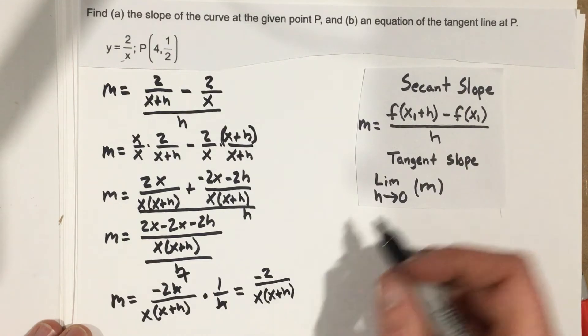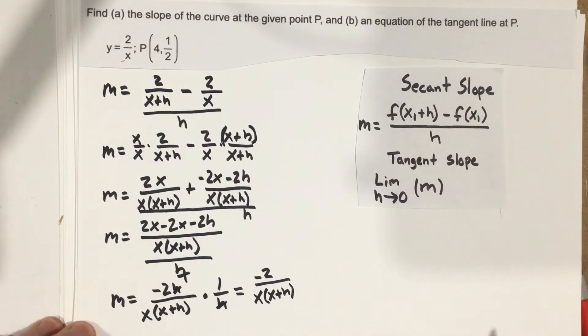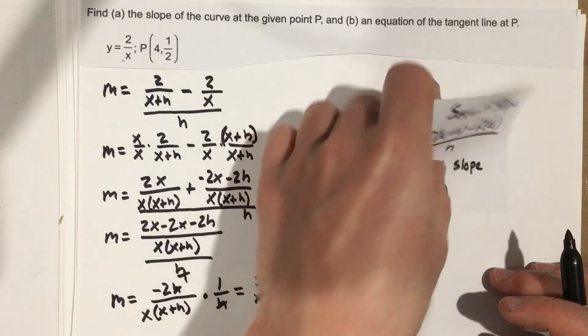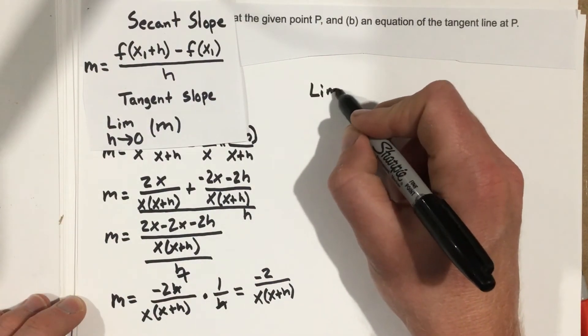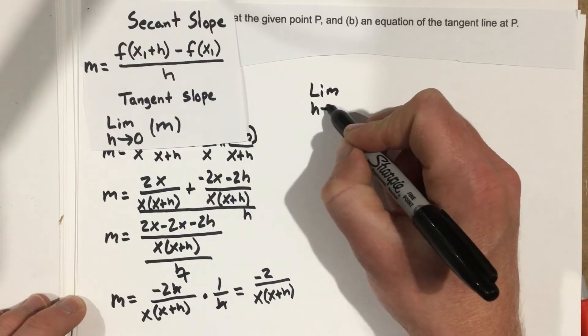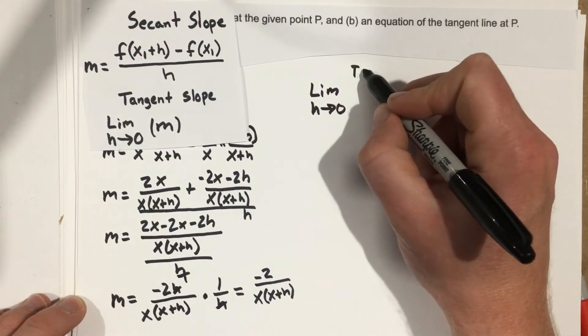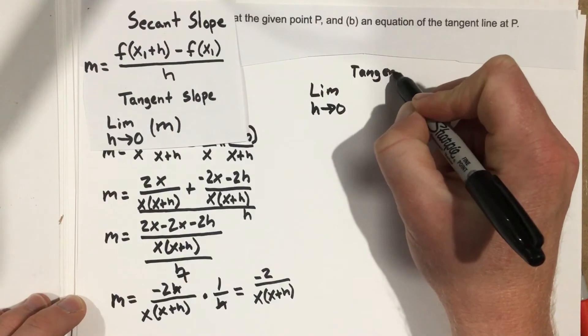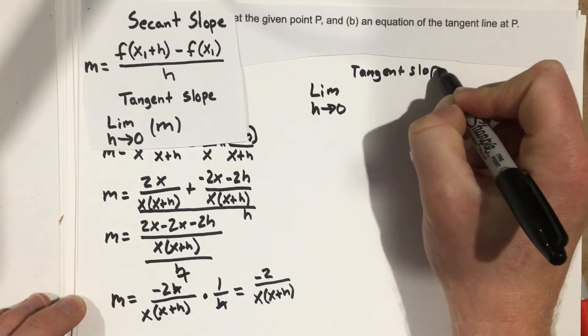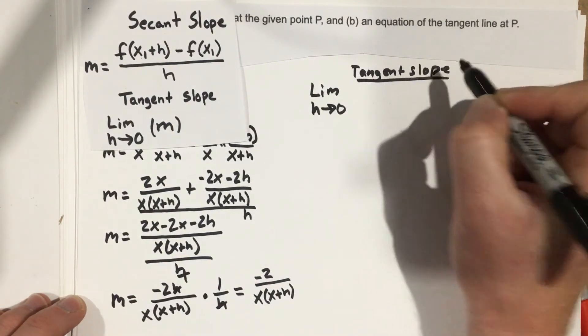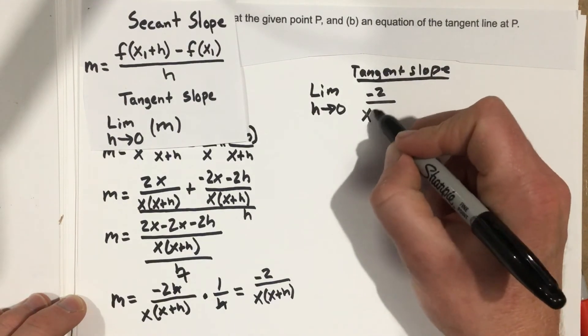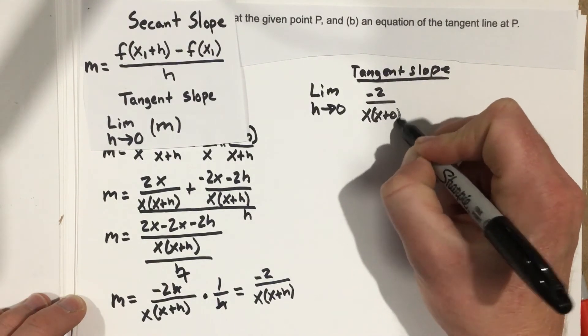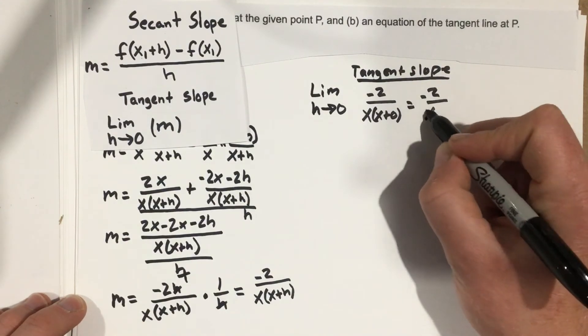Now we're at the point where we need to take the limit as h approaches 0. So we're going to go up and we're going to say limit as h approaches 0, and remember we're doing tangent slope here. And we get negative 2 over x times x plus 0, which is negative 2 over x squared.